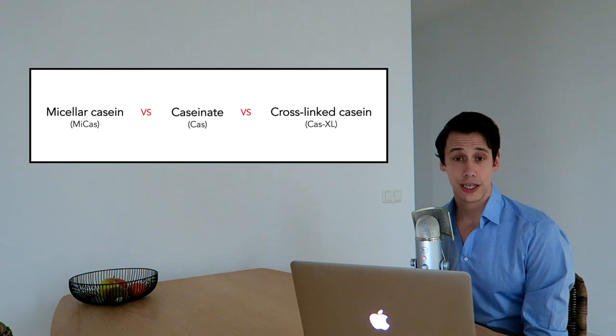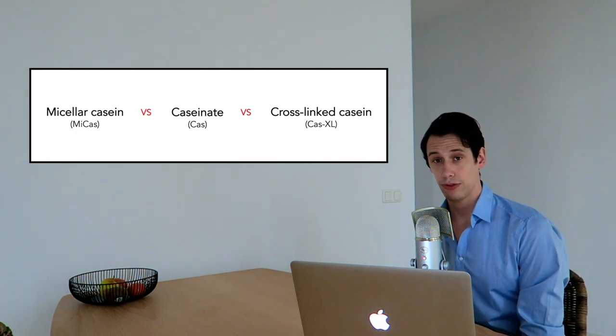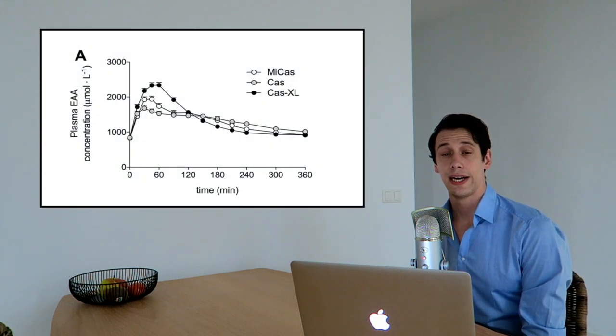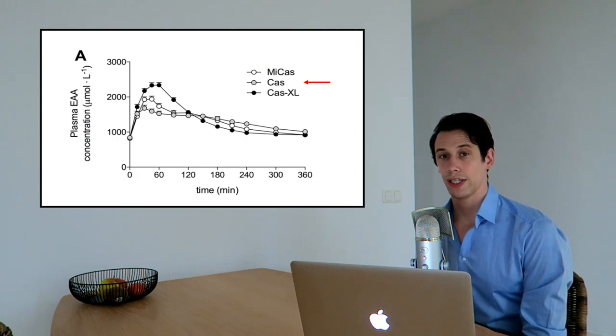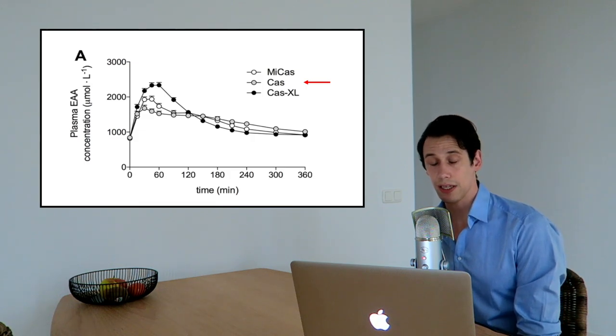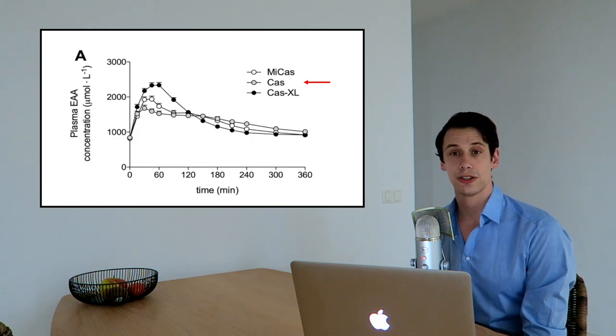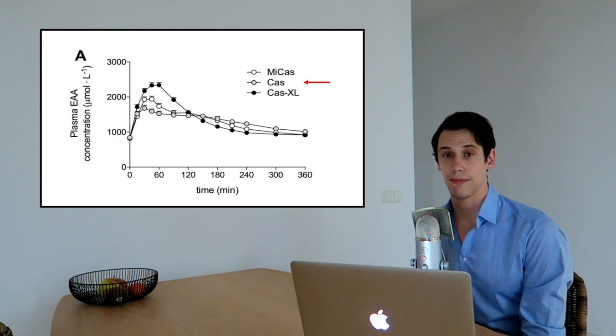However, very little is known about how these different casein proteins digest and absorb. So therefore, we conducted this study in which we compared micellar casein, casein 8 protein and cross-linked casein protein. And we found that the casein 8 was the slowest digestible protein of all three. And this was a bit surprising to us because it was generally believed that casein 8 is more rapidly digested than micellar casein.